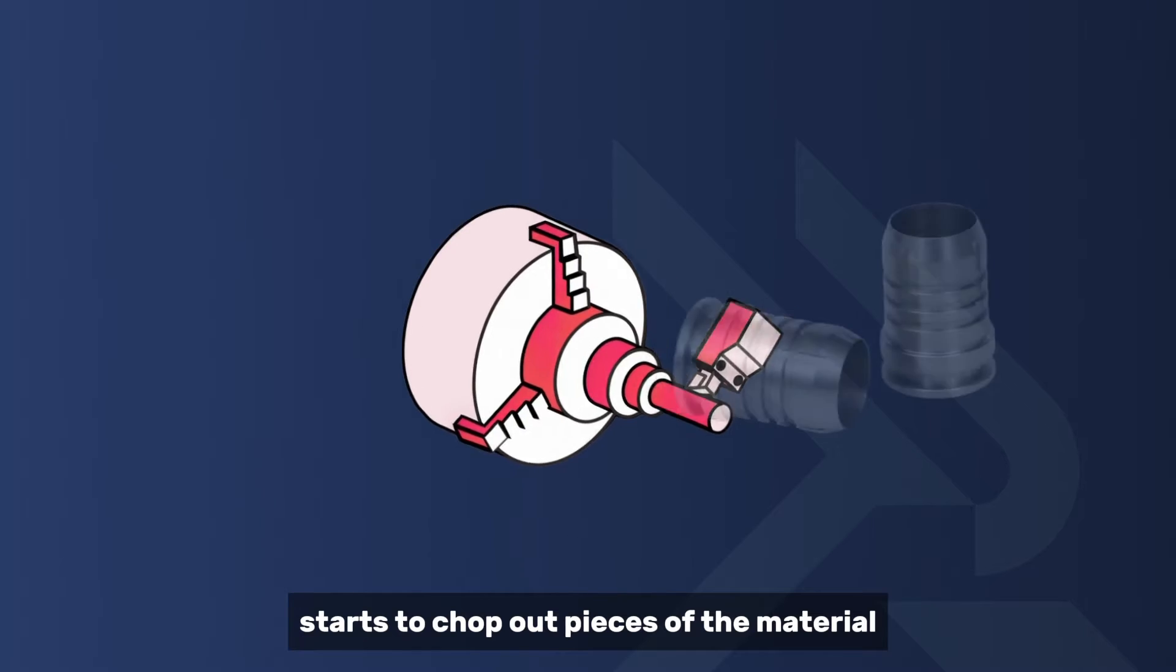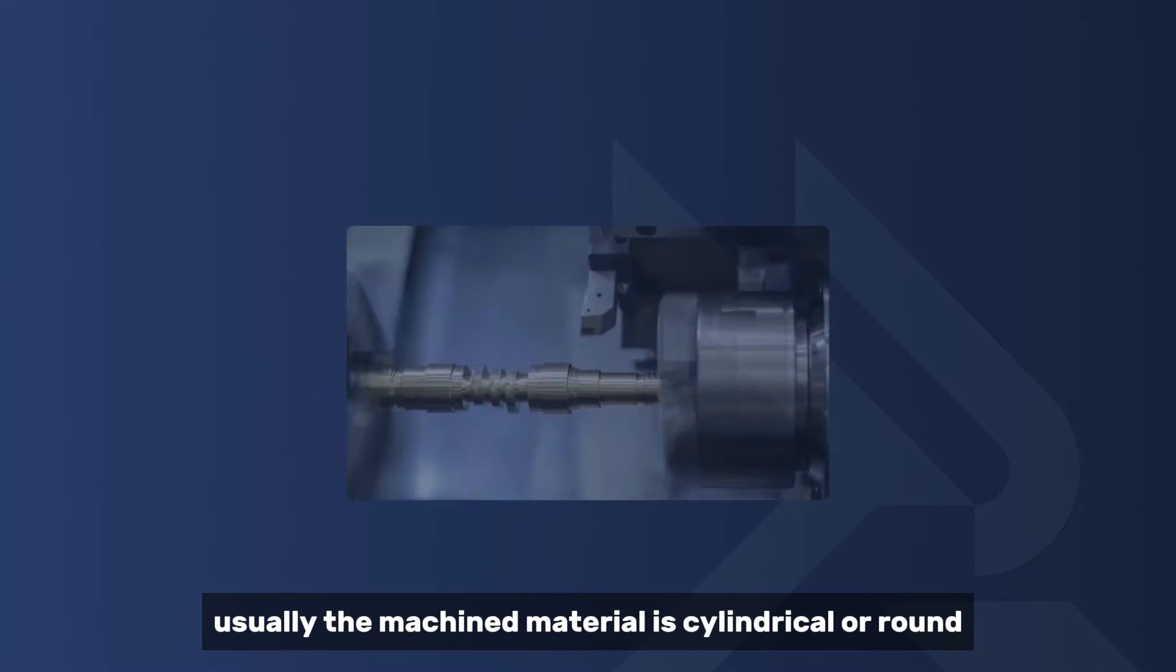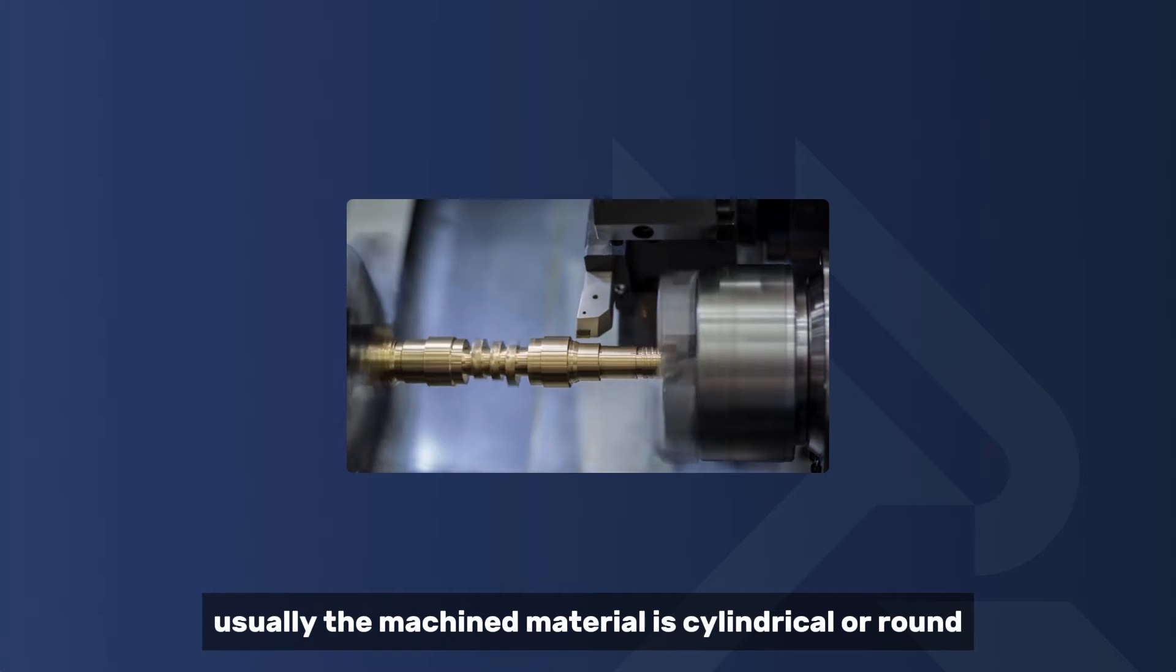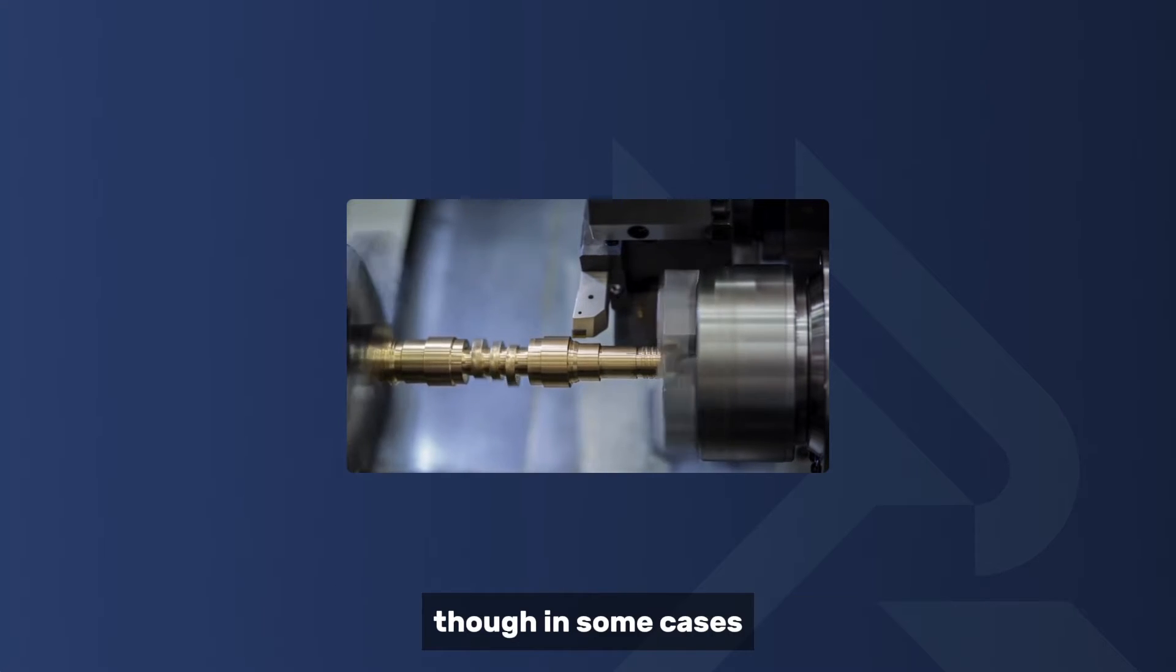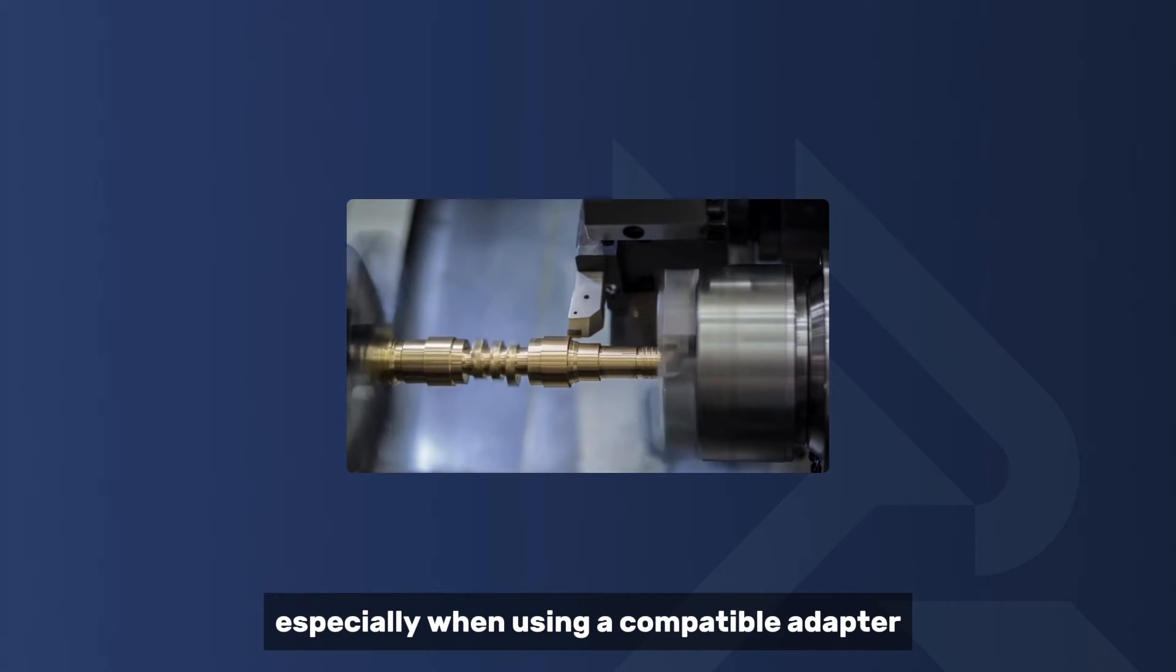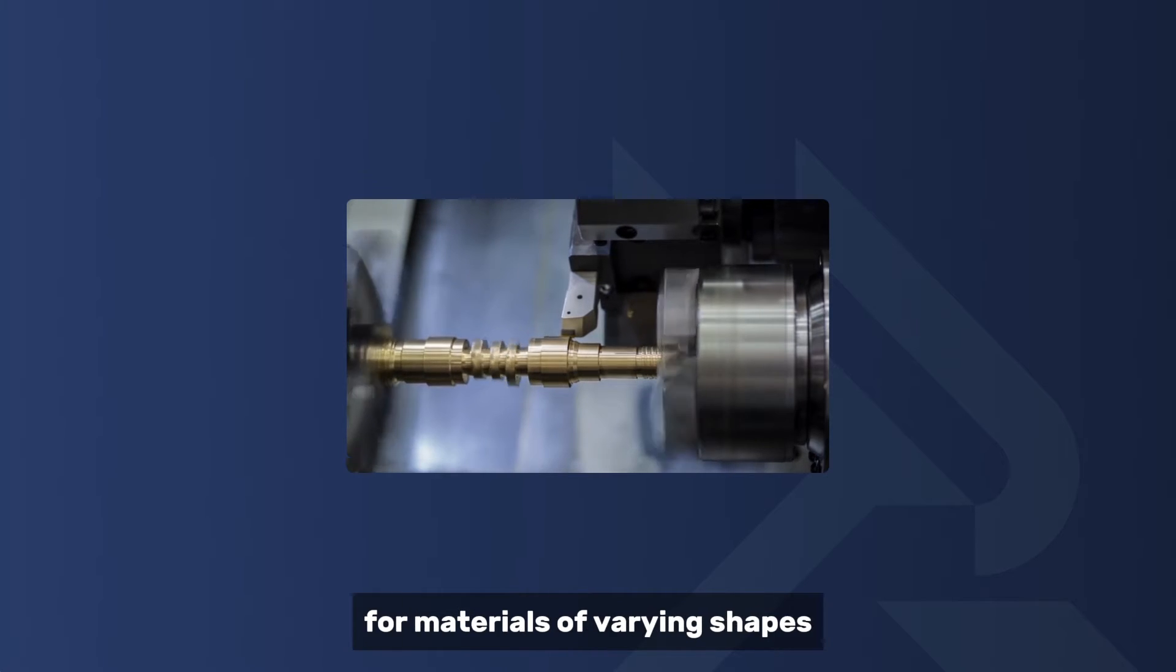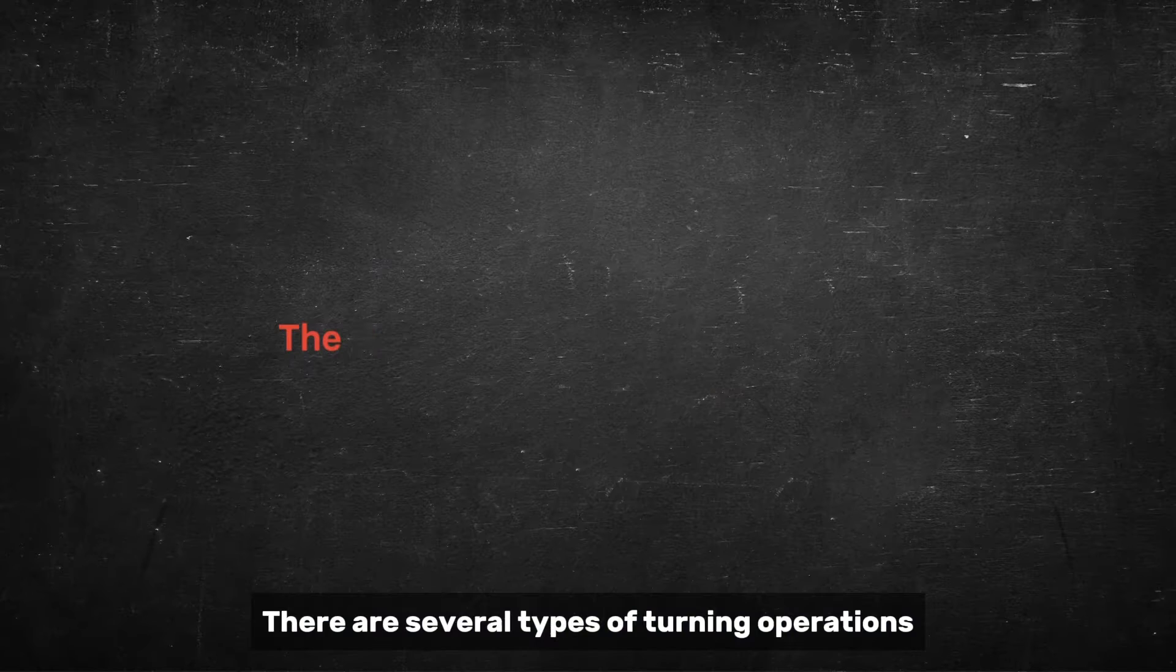Turning involves rotating and spinning a workpiece as the cutting tool starts to chop out pieces of the material from the exterior. Usually the machined material is cylindrical or round, though in some cases, especially when using a compatible adapter, turning can function well for materials of varying shapes.